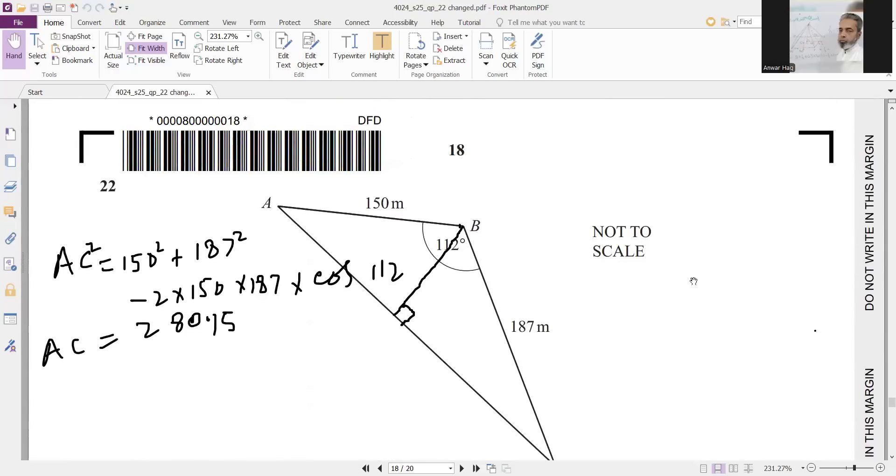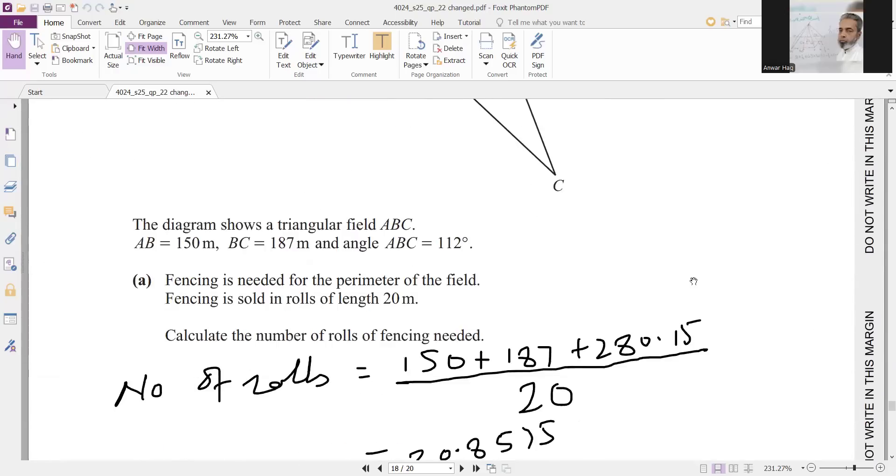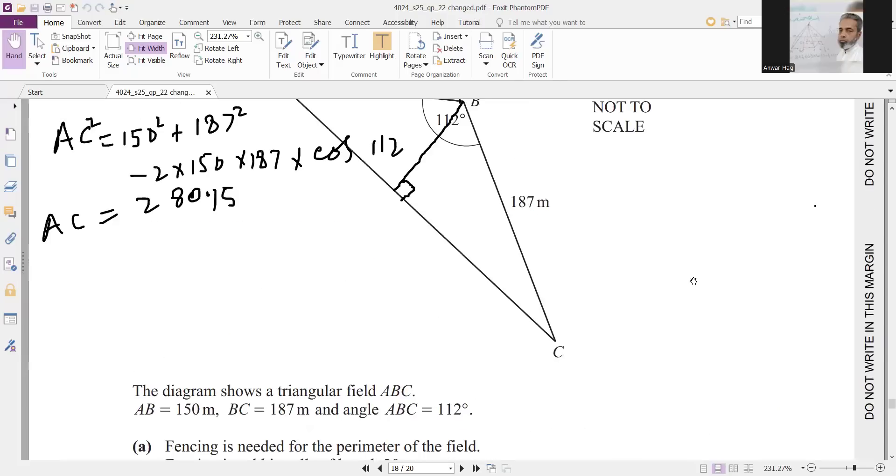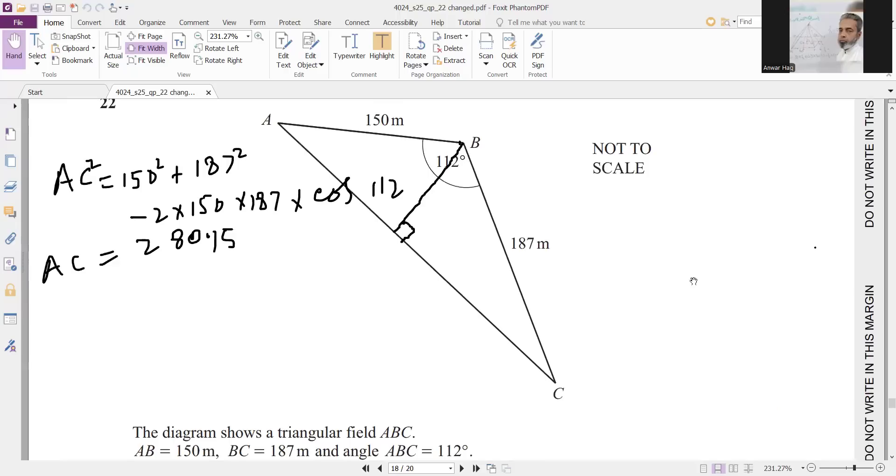Now in question 22, the diagram shows a triangular field ABC. Fencing required. For this, you have to find AC by using cosine rule: 150 square plus 187 square minus 2 into 150 into 187 into cos 112. So your answer will be 280.15.